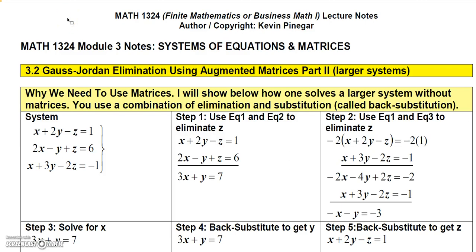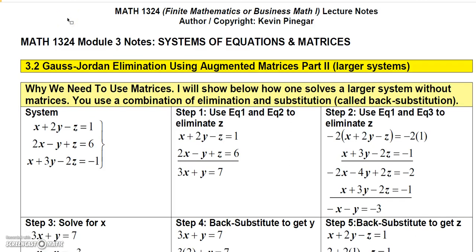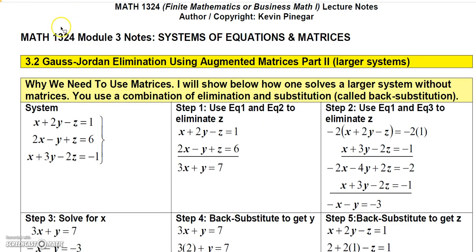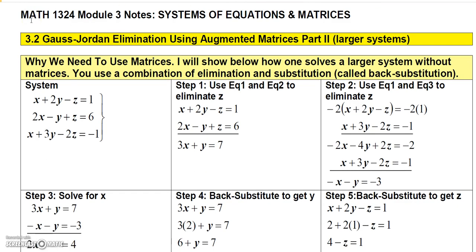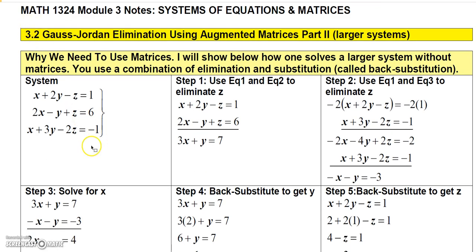I'm going to start this section with a problem that you solve without using matrices, and hopefully you'll see that when you use augmented matrices it's very similar to what we're doing here. So let's start with this system: x plus 2y minus z equals 1, 2x minus y plus z equals 6, x plus 3y minus 2z equals negative 1.